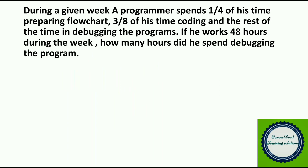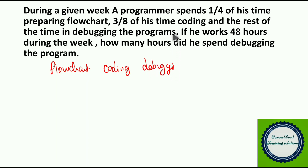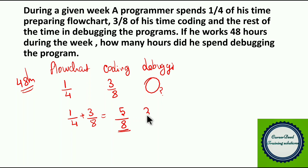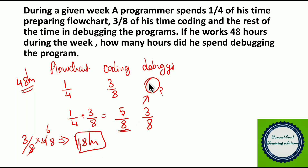Moving to question number 2. During a given week, a programmer spends 1/4 of the time preparing flowcharts, 3/8 of the time in coding, and the rest of the time in debugging. If he works 48 hours during the week, how many hours did he spend debugging? He spends 1/4 plus 3/8 — that is 5/8 — in flowchart plus coding. So the remaining 3/8 is spent for debugging. 3/8 of 48 hours is 6 into 3, which is 18 hours. So 18 hours is the answer.